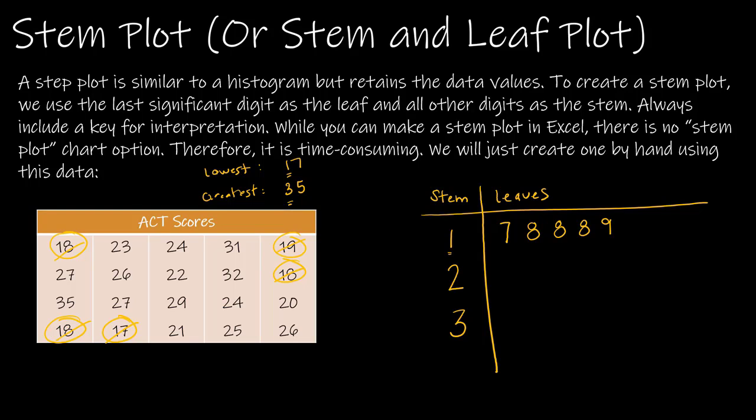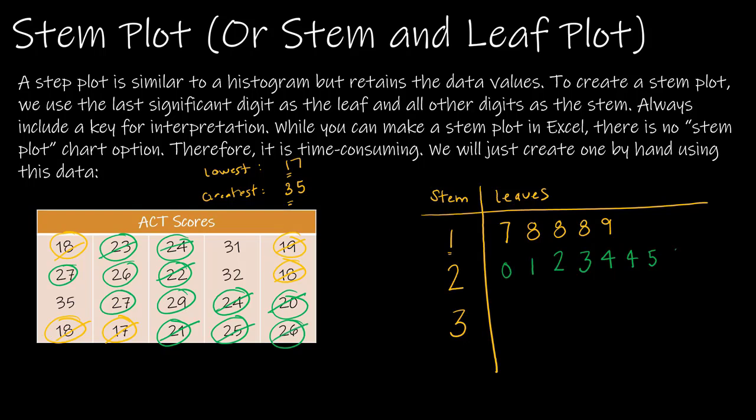Now let's do the same for a stem of 2. And this is why it's helpful to have your array ordered because then you don't have to worry about trying to determine which one goes next. So 20 is the smallest. And when you're entering in these values, notice I'm trying to line up the 0 right below the 7 and the 1 right below the 8, because that's what gives us the correct proportions. Then I have 22, 23, 24, 24, 25, 26, 26, 26, 27, 27, and a 29.